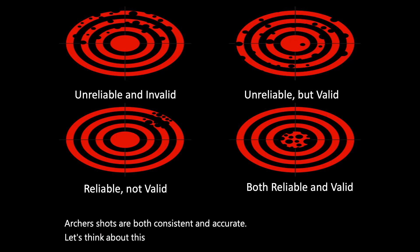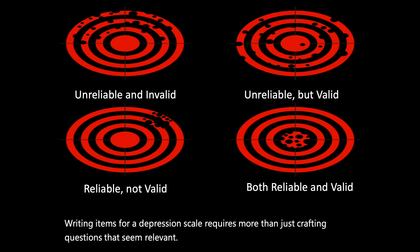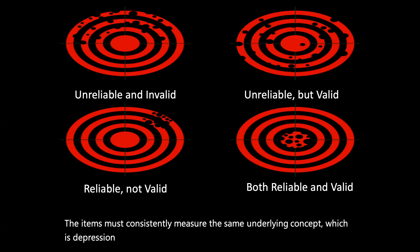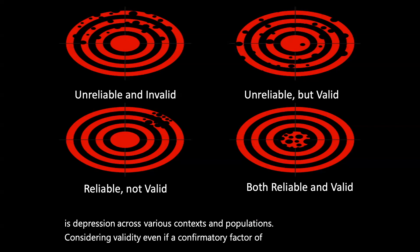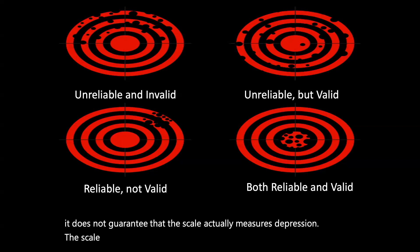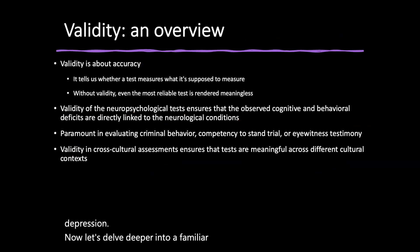In an applicable sense, writing items for a depression scale requires more than crafting questions that seem relevant. The items must consistently measure the same underlying concept — depression — across various contexts and populations. Even if a confirmatory factor analysis fits the data well, it does not guarantee that the scale actually measures depression. The scale must also accurately reflect the underlying construct of depression.